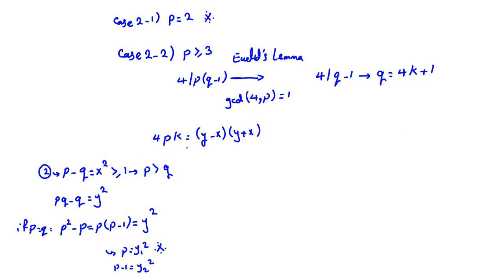Since P is strictly greater than Q, X is at least 1, and X and Y are both positive. So Y plus X is greater than Y minus X. Now, P cannot divide the (Y minus X) factor. If P were there, then P times something equals P times (Q minus 1), but P is greater than Q, so P is greater than Q minus 1 — contradiction. Therefore P must appear in the (Y plus X) factor.